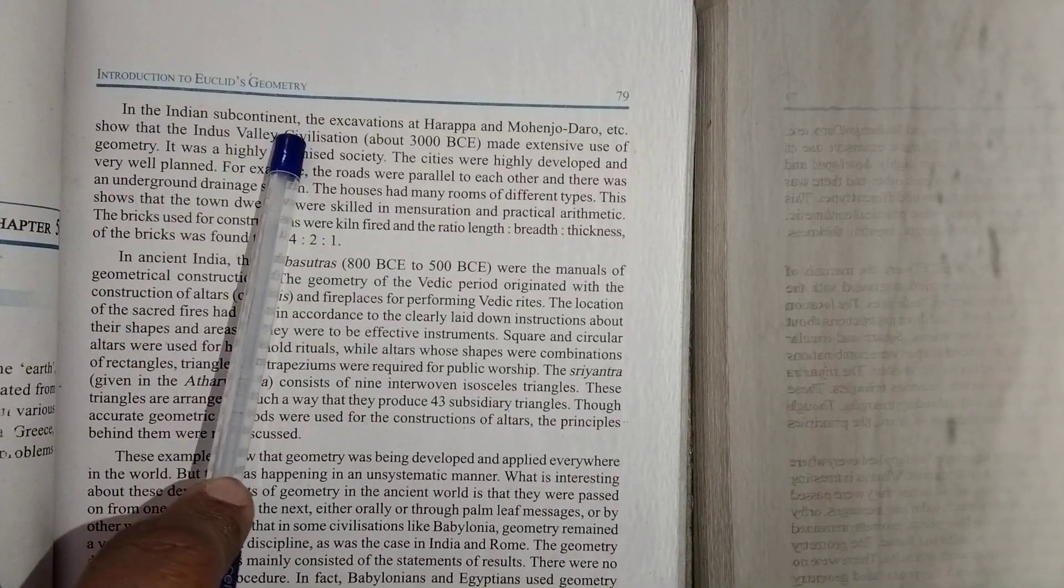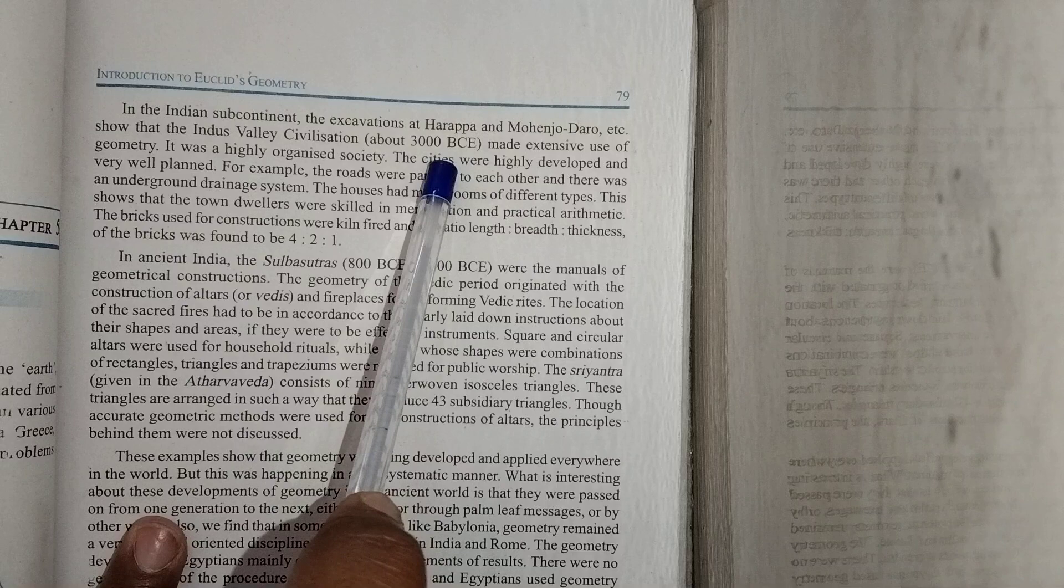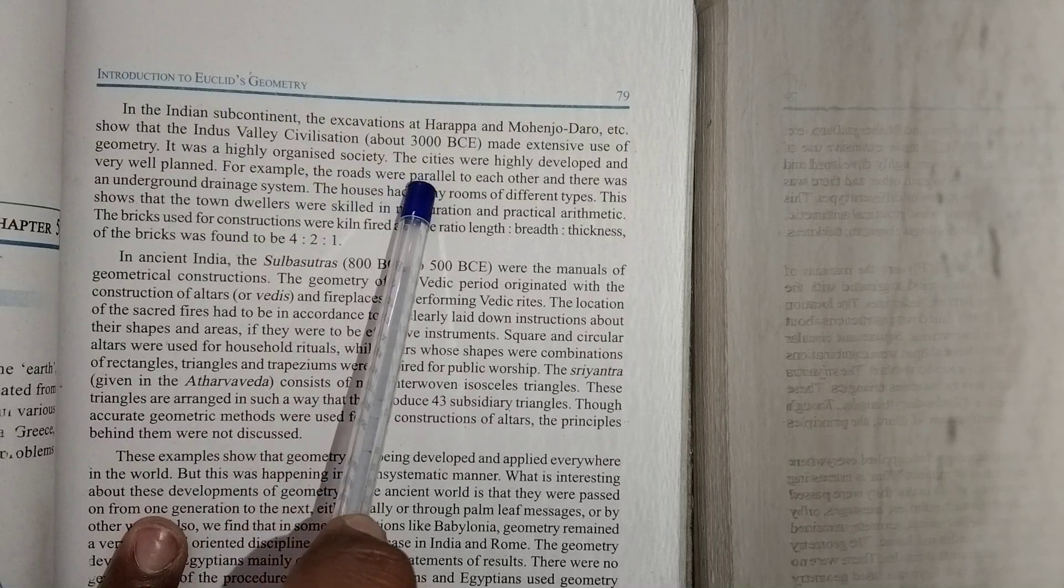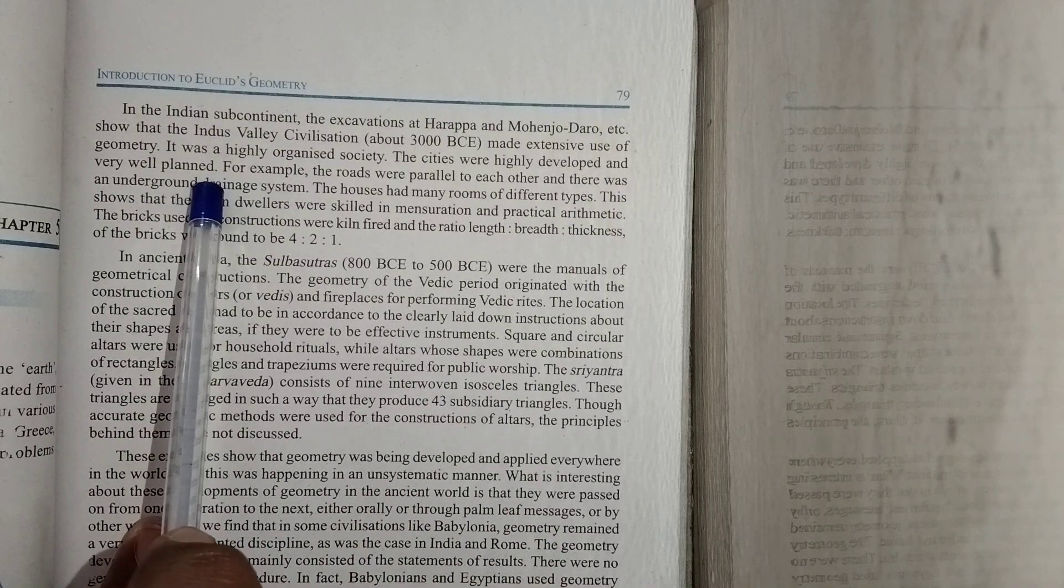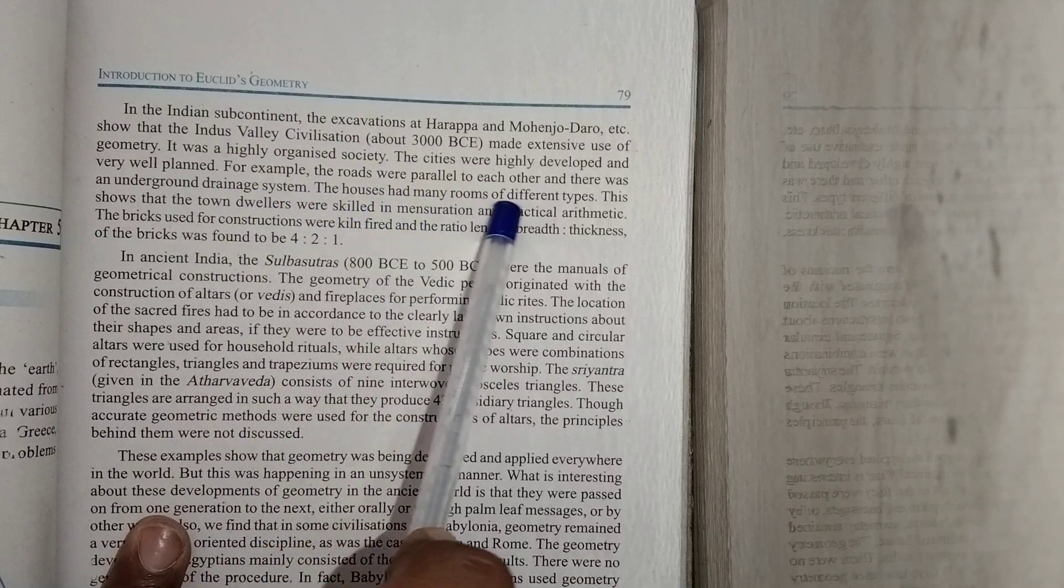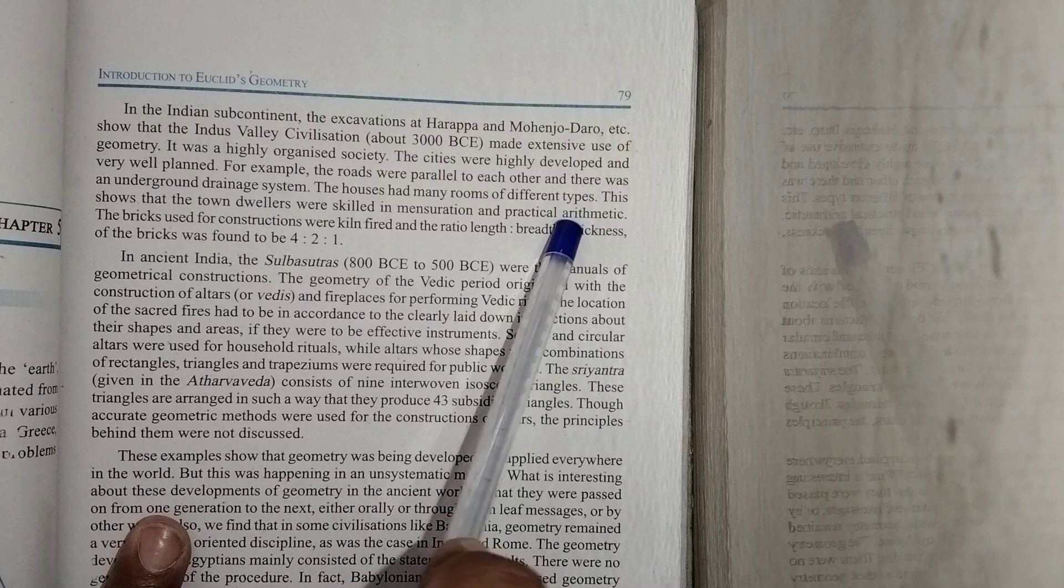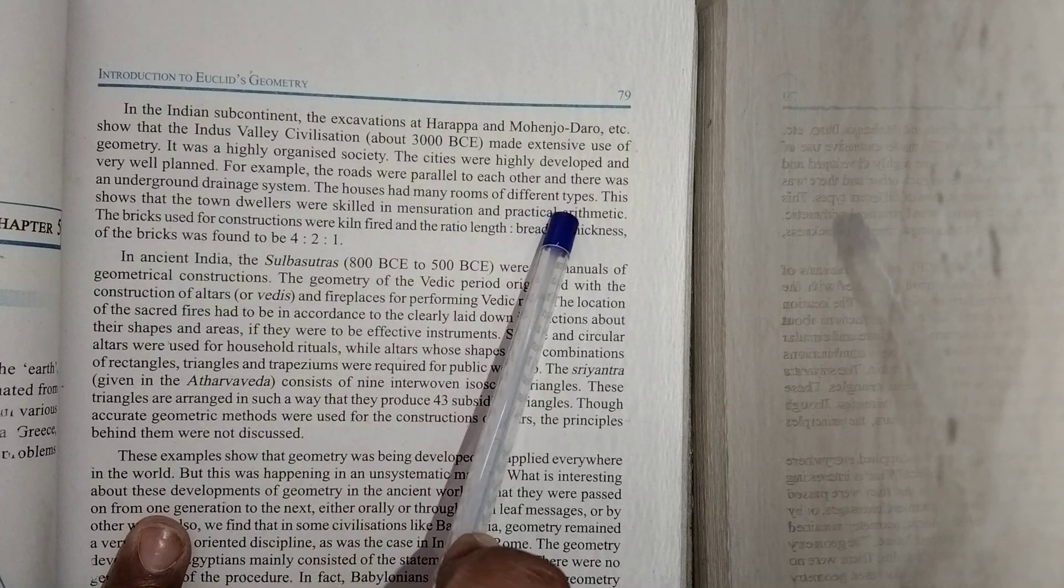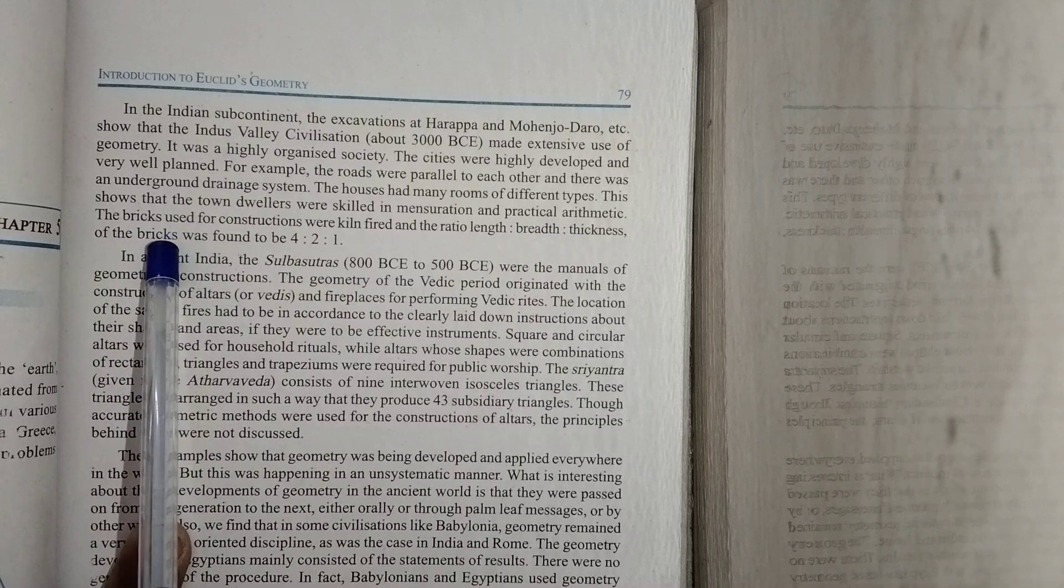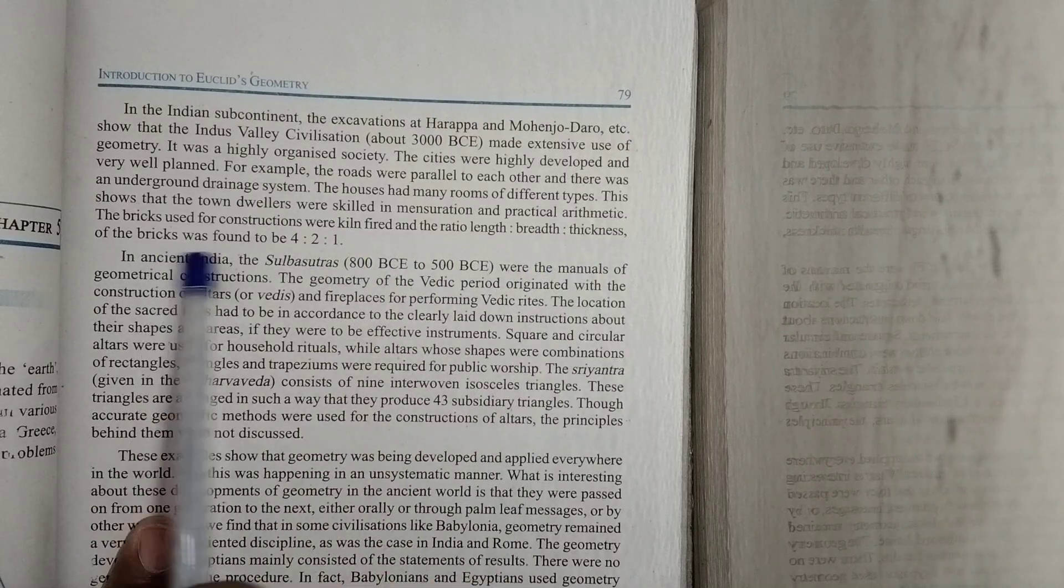In the Indian subcontinent, excavations at Harappa and Mohenjo-Daro show that the Indus Valley civilization about 3000 BCE made extensive use of geometry. It was a highly organized society. The cities were highly developed and very well planned. For example, the roads were parallel to each other and there was an underground drainage system. The houses had many rooms of different types.